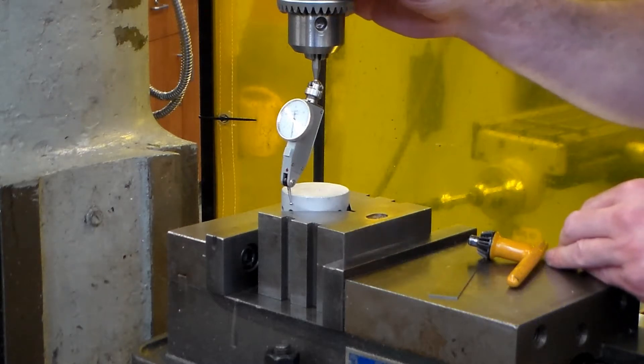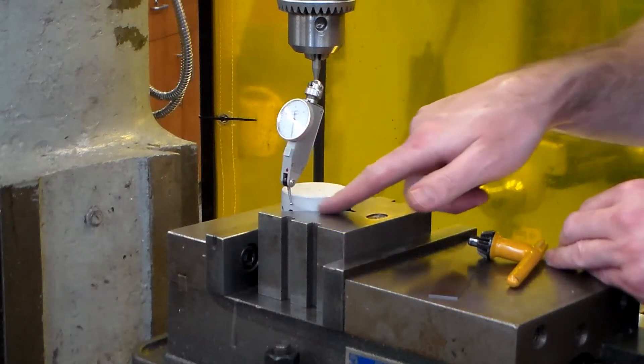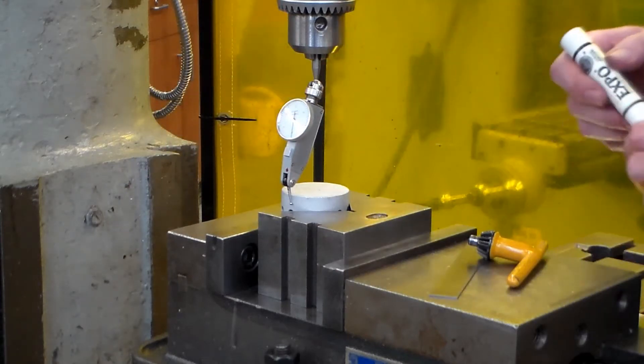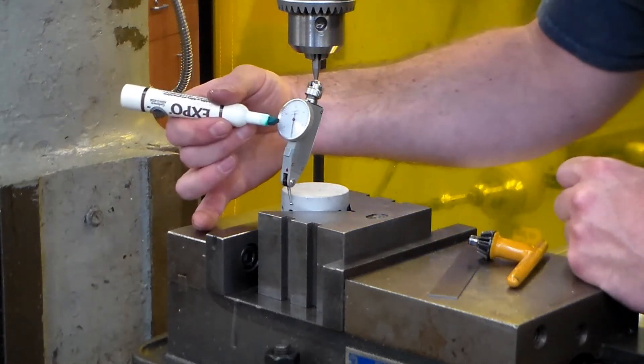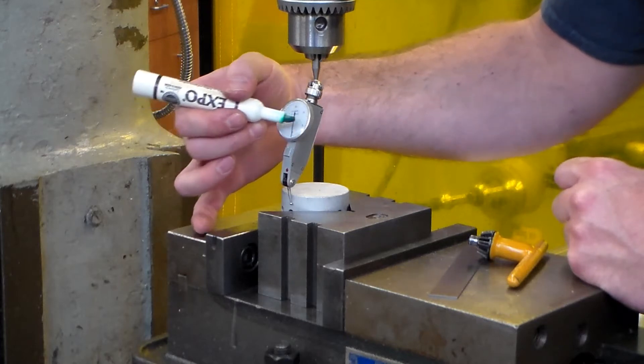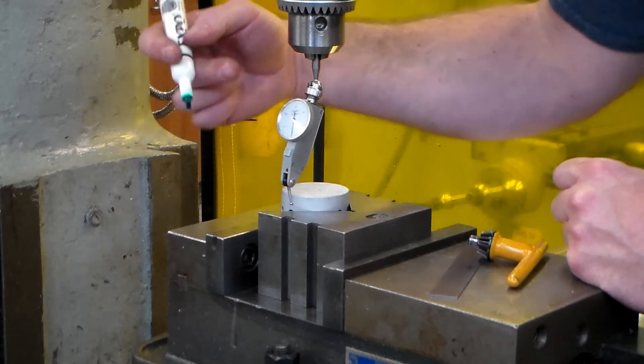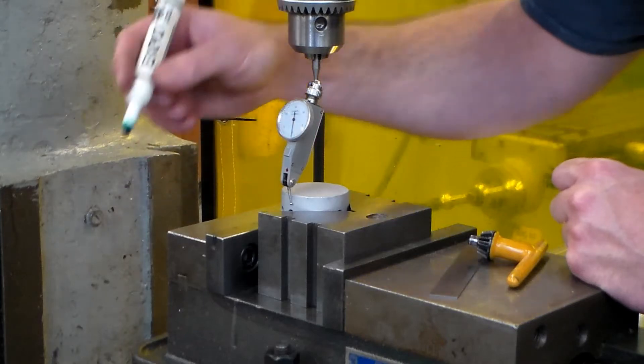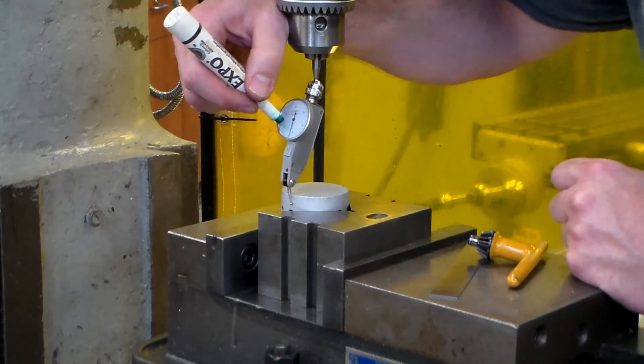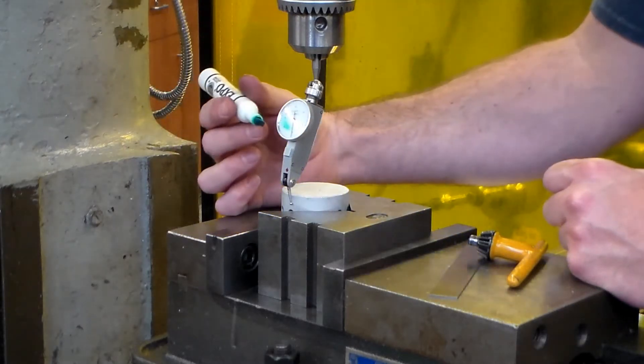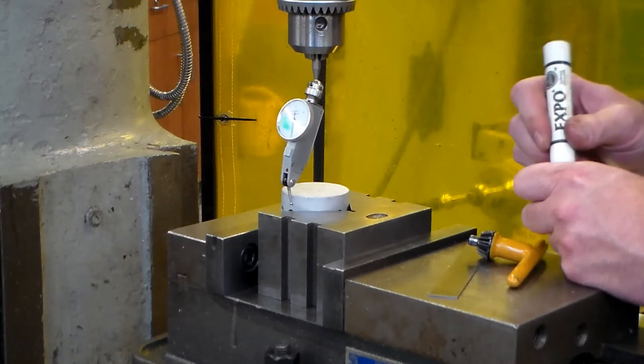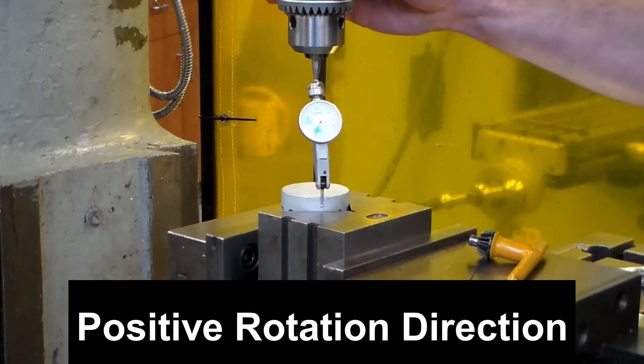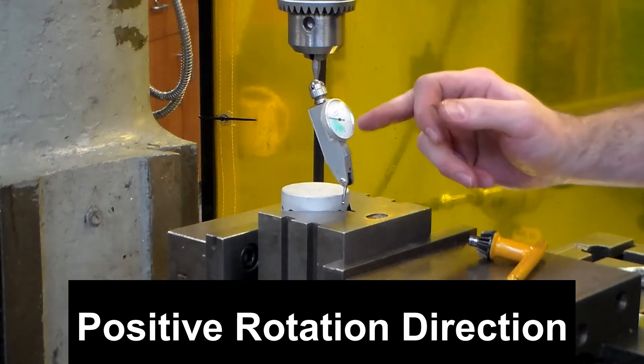Now what we're going to see is I'm going to swing the indicator around the part and I'm going to watch which way my dial is moving. Now, some indicators will have a different color on one side than the other from the zero, and that's to help you be able to pay attention and follow are you going positive or negative. So this is a dry erase pen marker, and I'm putting a little green mark on the positive side of my indicator. So I'm pretty much at zero. As I sweep around this part, I have went positive ten thousandths.